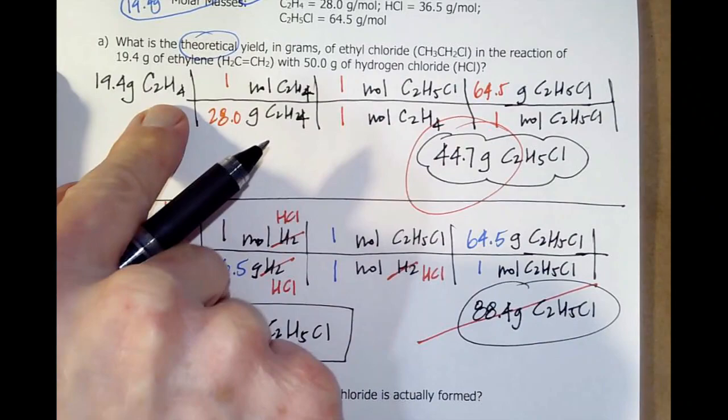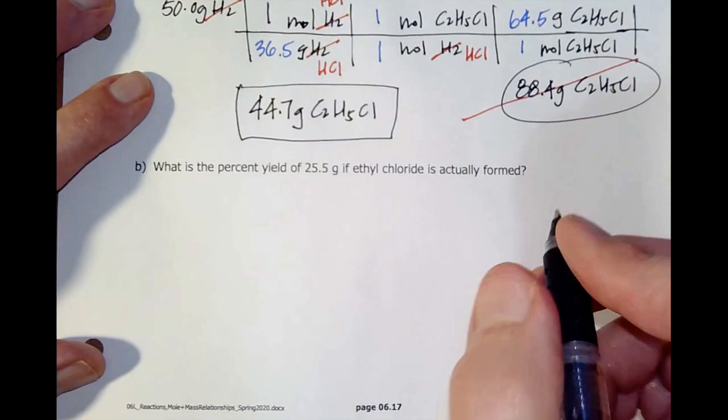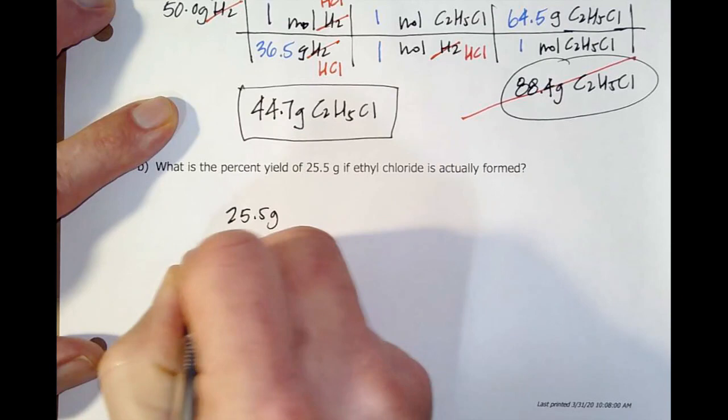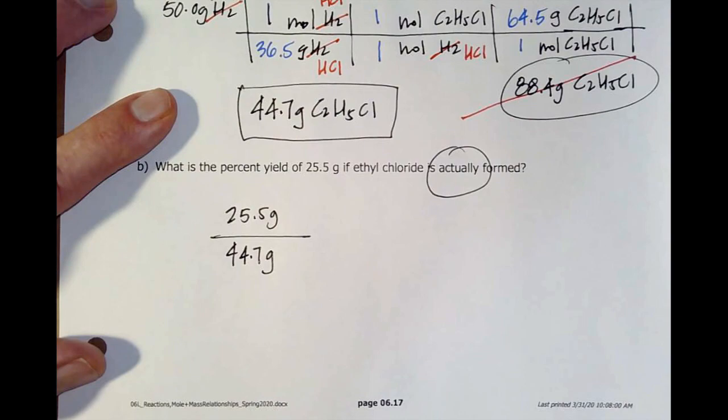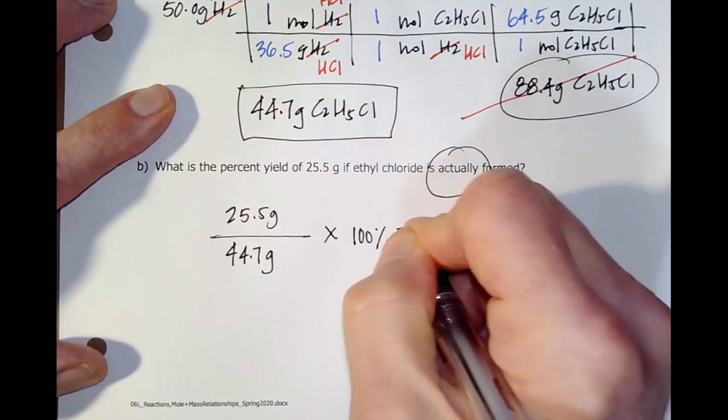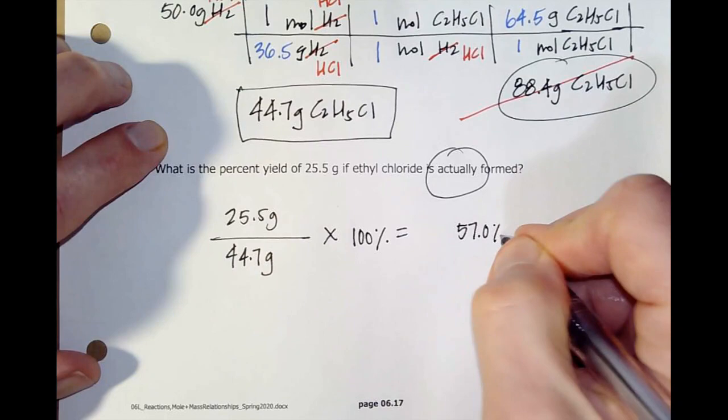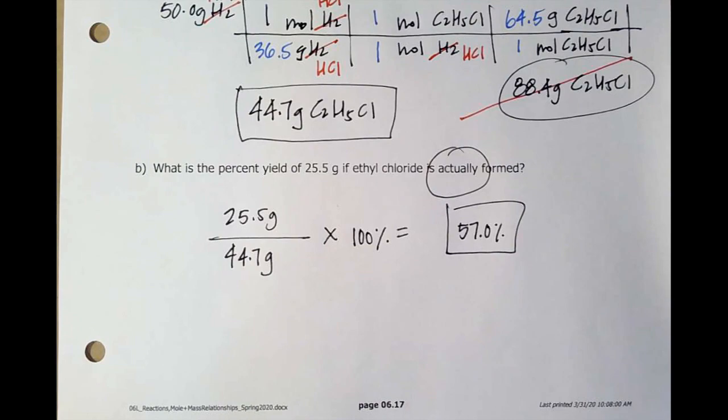Now, it says, hey, you only got 25.5. So I'm going to do the actual 25.5 grams. That's what I actually got. That's when I went into a lab somewhere and did the experiment. I expected 44.7 grams. There's my ratio. And we just converted to a percent by multiplying by 100%. I get 57.0% is my yield. That's my percent yield from this experiment.